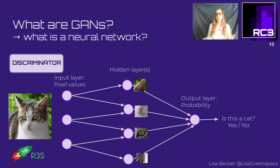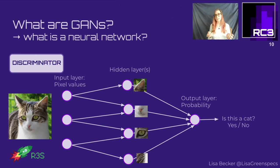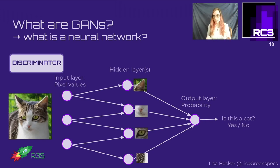This is basically what our discriminator does. The discriminator is the art critic that sees an image - for example of a cat - and is supposed to tell us whether it is indeed the image of a cat or not.